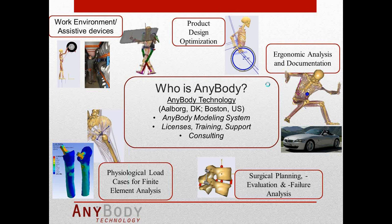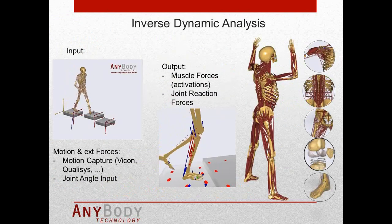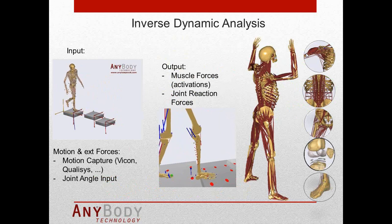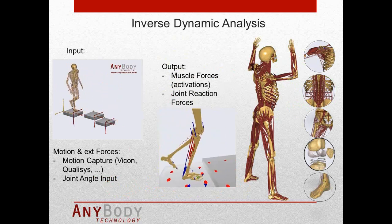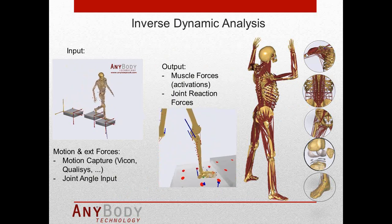AnyBody does musculoskeletal simulation. That means we use an activity — basically motion — as input. You apply this motion to the full body model, which contains bones, joints, muscles, and ligaments. Then you can compute internal loads like muscle forces, activities, power, and also joint forces and moments. This principle is called inverse dynamics — input is motion, and if you don't have external forces available, AnyBody is capable of computing interaction forces with the environment.